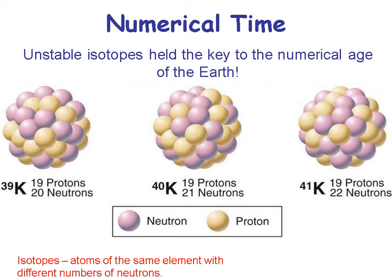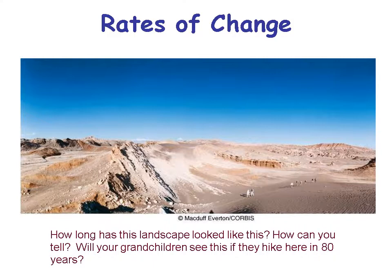Numerical time gives us the ability to use unstable isotopes to find out how old the Earth is. Isotopes are atoms with the same number of protons but different numbers of neutrons. For example, potassium has 19 protons, but potassium-39 has 20 neutrons, potassium-40 has 21 neutrons, and potassium-41 has 22 neutrons.